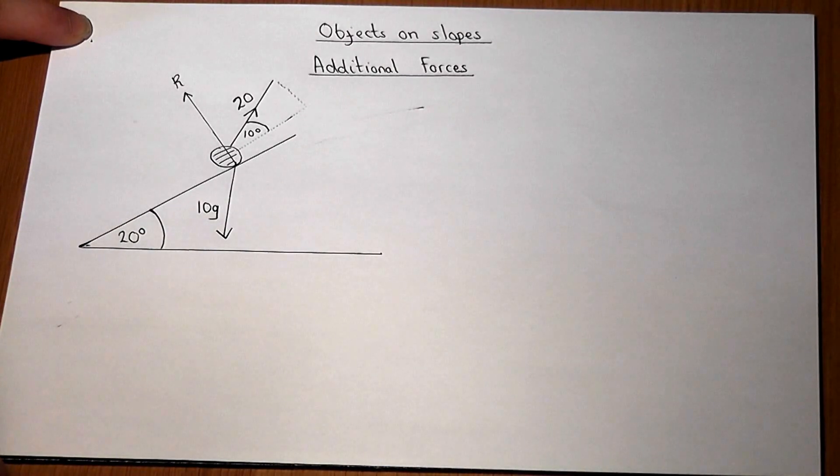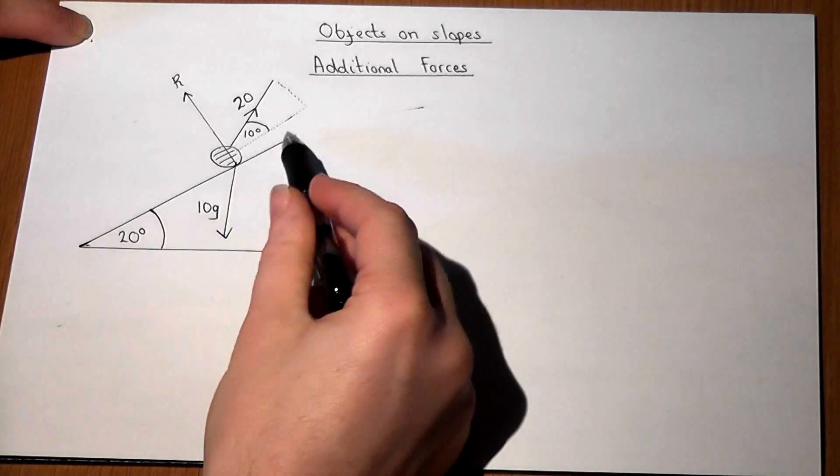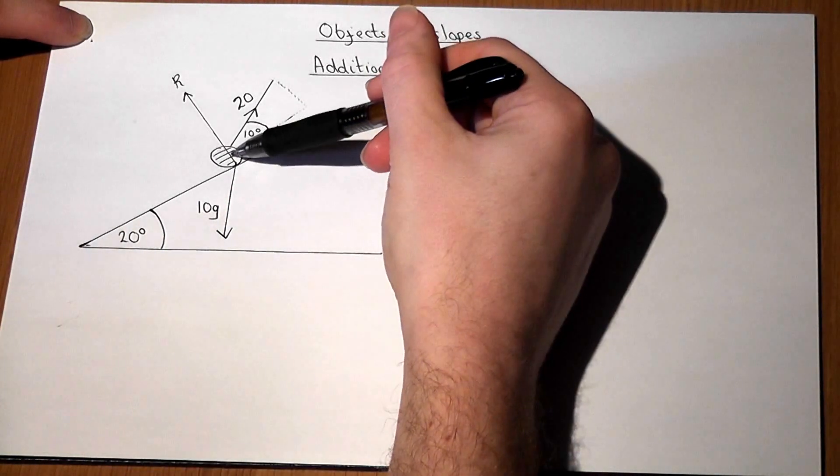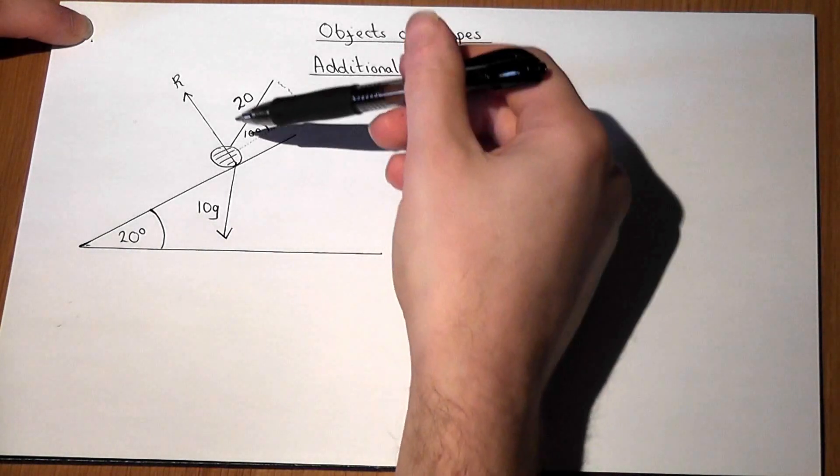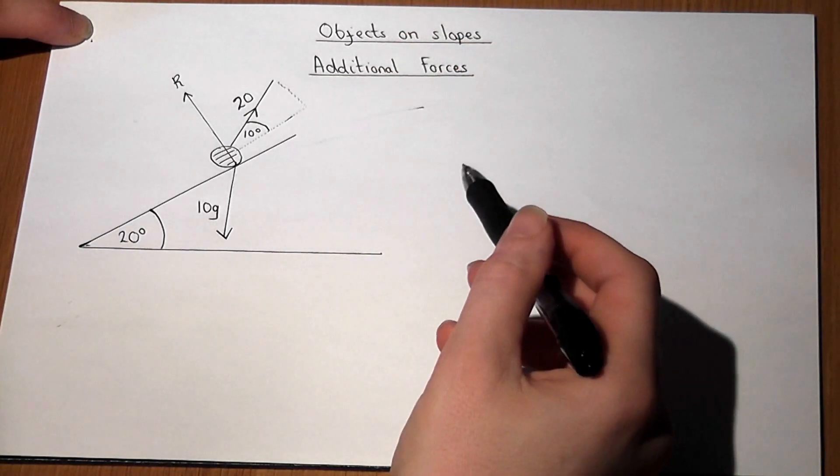In this second video on slopes, we have an object on a slope with this weight acting downwards, the reaction force, but also some tension on a bit of string.